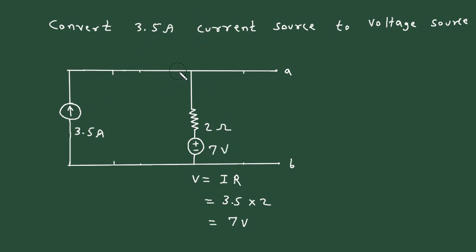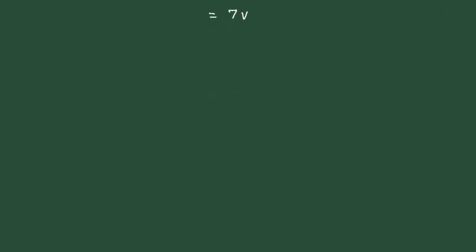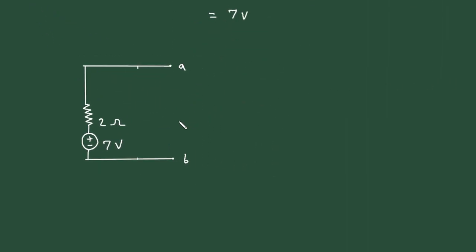Now we can erase this current source. So this will be our final circuit — a voltage source in series with resistance. So this is our final answer.